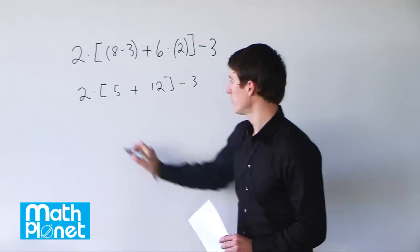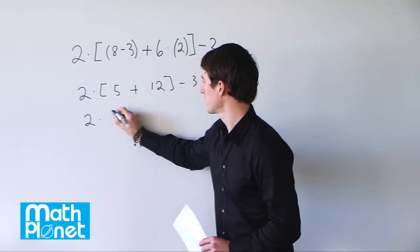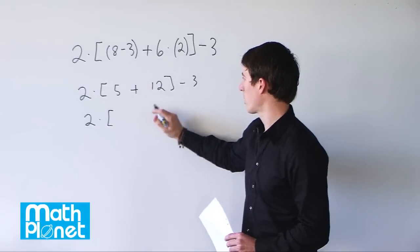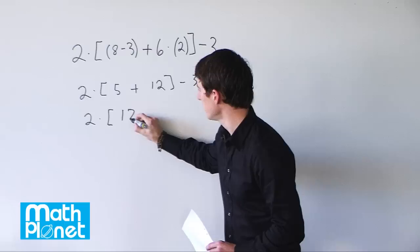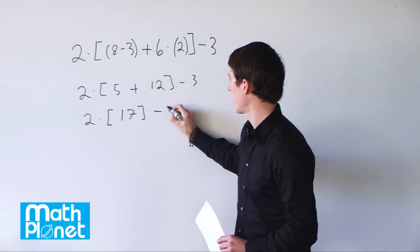Now we're going to add 5 and 12. So we still have 2 times bracket, 5 plus 12 is 17 minus 3 still.